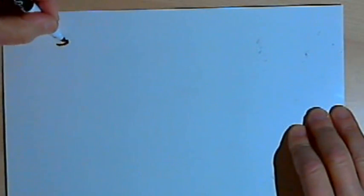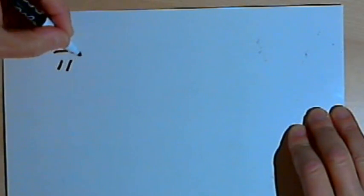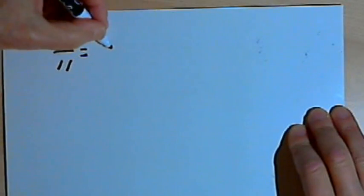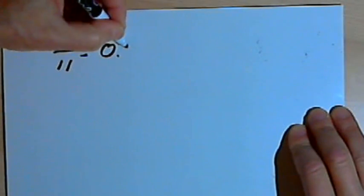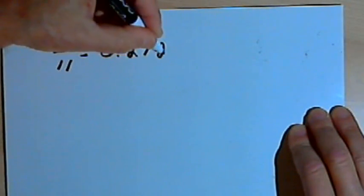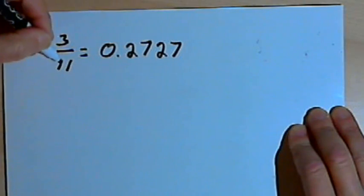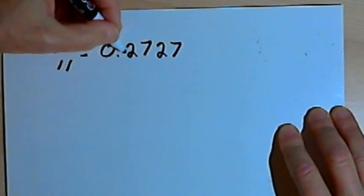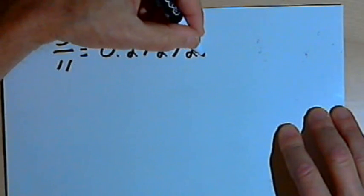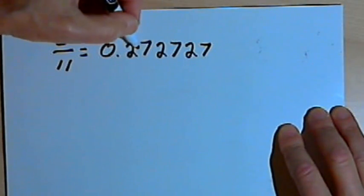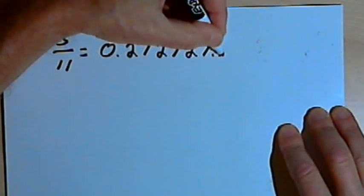You may have noticed that sometimes when you've got a fraction, like the fraction 3 over 11, and you turn that into a decimal, you get what's called a repeating decimal. When we turn 3 over 11 into a decimal, we get 0.272727, and this repeating pattern, 27, is going to keep on going.